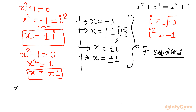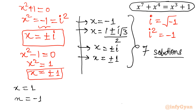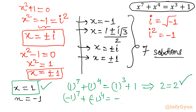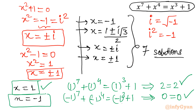Let us verify the real solutions. For x = 1: 1⁷ + 1⁴ = 1³ + 1, which gives 2 = 2 — true. For x = -1: (-1)⁷ + (-1)⁴ = (-1)³ + 1, which gives -1 + 1 = -1 + 1, so 0 = 0 — also true. We have verified both real solutions; the remaining 4 are complex.